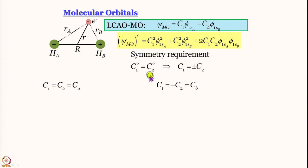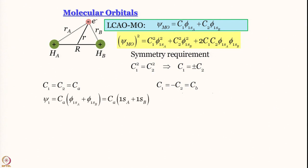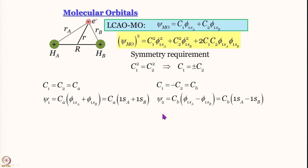When C₁ = C₂ we set both equal to Cₐ, and when C₁ = −C₂ we set them equal to C_b. The first wave function is ψ₁ = Cₐ(1sₐ + 1s_b), and the second is ψ₂ = C_b(1sₐ − 1s_b). Most of you would already know that the plus combination is the bonding orbital and the minus combination is the antibonding orbital; why bonding and why antibonding we will come to in its time.